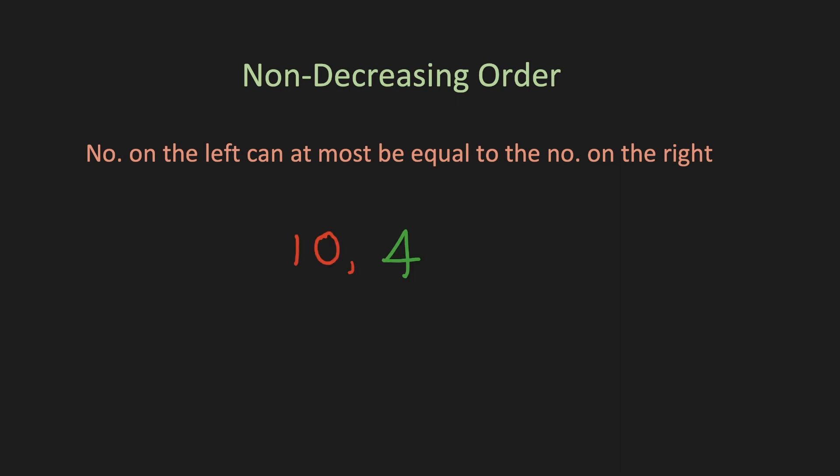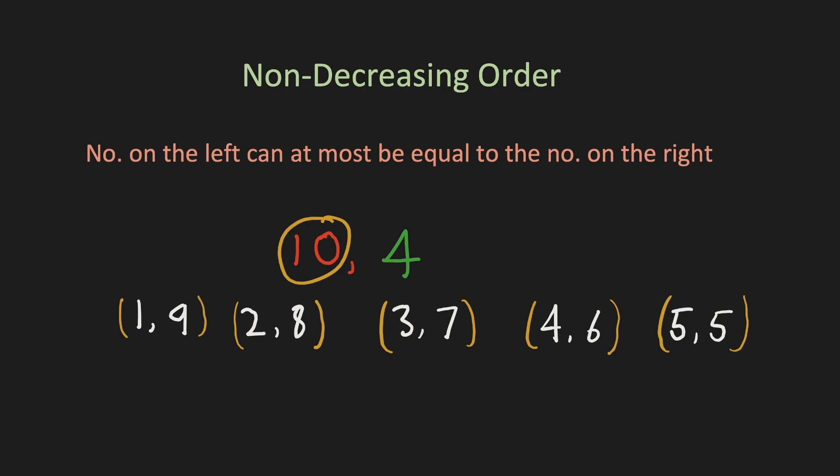So if we take this example to make it into non-decreasing order, the left number can at most be equal to 4. So we have to split 10 into two numbers such that it does not violate this condition. If we consider all the possible splits of 10, we'll observe that all of these violate this condition. So it is not possible to split this using only two numbers.